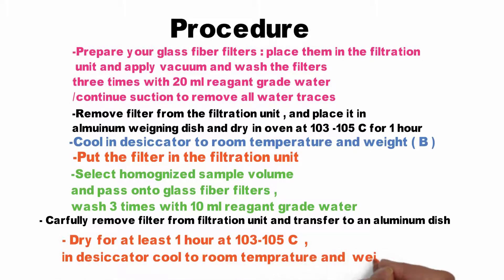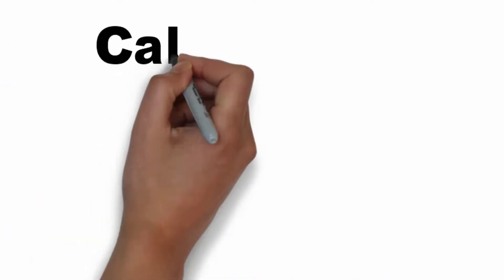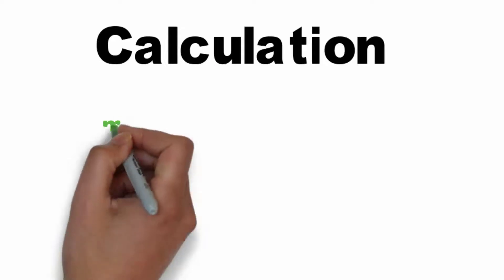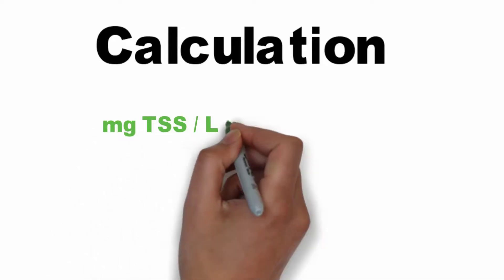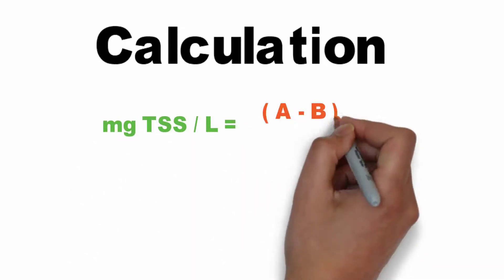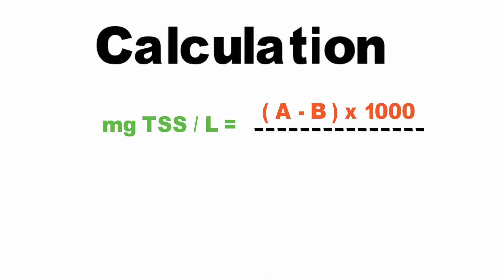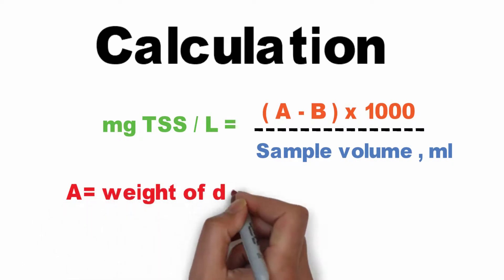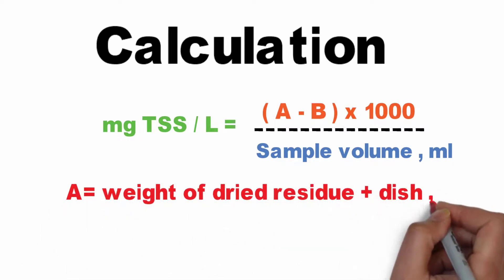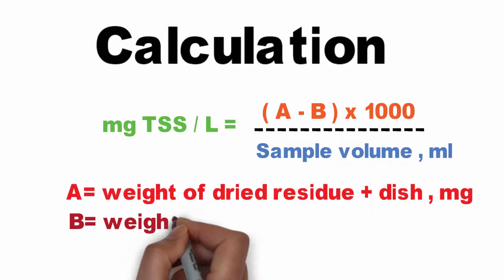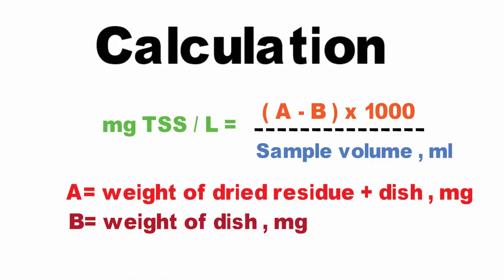Now for the calculation, use this equation: Milligrams of TSS per liter equals A minus B times 1,000 divided by the sample volume in milliliters. A is the weight of the dried residue plus the weight of the dish. B is the weight of the dish alone, and TSS is the total suspended solids.